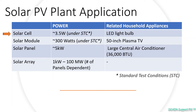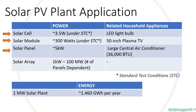To know more on standard test conditions, a separate presentation will be linked here. A module has nearly 300 watts of output power under STC, similar to the power consumption of a 50-inch plasma TV. A solar panel has nearly 5 kilowatts of output power, comparable to a large central air conditioner. If you need to understand the difference between a solar module and a solar panel, please check out the video on the top right-hand corner. A solar PV plant with a maximum output of 1 megawatt peak can produce at least 1.46 gigawatt hours of energy.